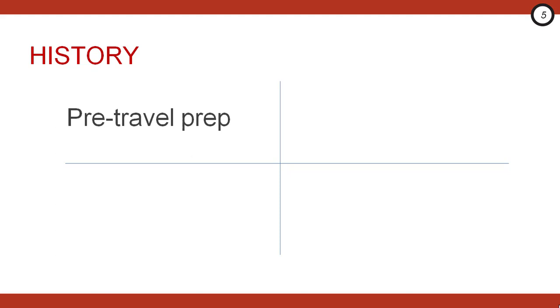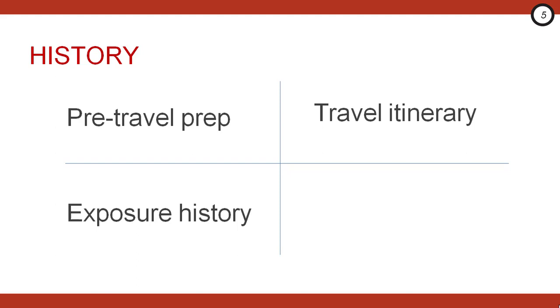When approaching this patient, you want to ask specifically about a couple of things. Pre-travel preparation: had they gone to a travel clinic? Did they get immunizations or malaria prophylaxis? What was their travel itinerary? Where did they go? Were they visiting friends or relatives? Did they have any specific exposures concerning foods or high-risk behaviors? Clarify about insect bites, animal exposures, or sick contacts.